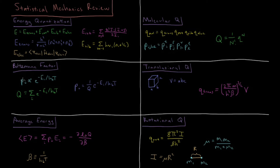The Boltzmann factor determines the probability of a molecule being in any one of these given states, determined by its set of quantum numbers. That probability is proportional to e to the minus energy of that state divided by Boltzmann constant times temperature — this is the Boltzmann factor.